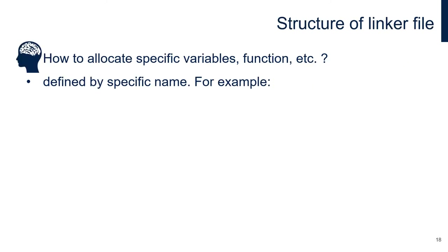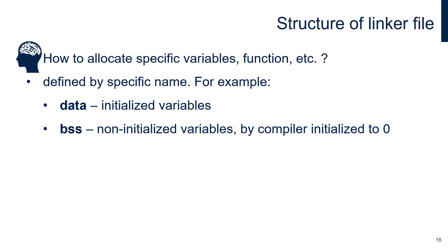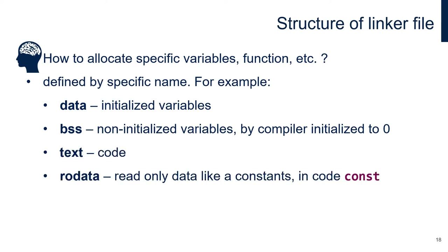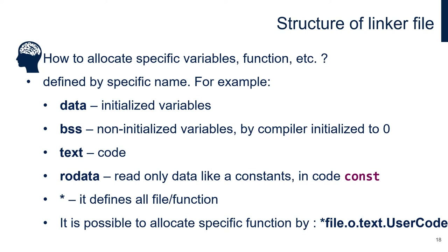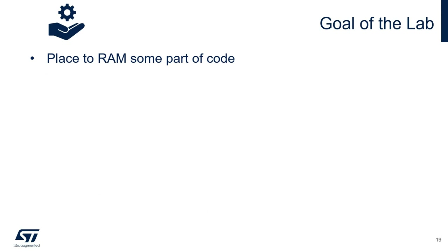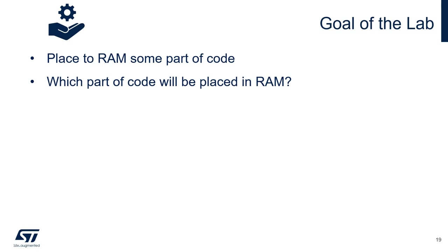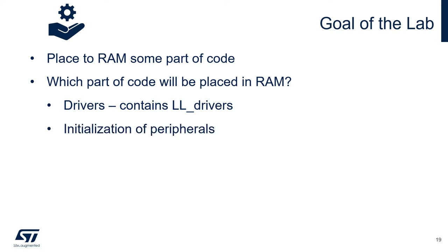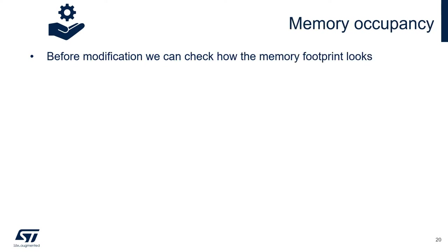Where data is stored is defined in the linker file or linker script. Definitions and allocations are made in chronological order, and each IDE has different semantics. We will do modifications in the linker file for GCC. In cases where the vector table is placed in RAM, do not forget to change the VTOR register. The linker file uses specific section names: data for initialized variables, BSS for non-initialized variables, text for code, and RO data for read-only data like constants. The goal of this lab is to place the LL drivers, peripheral initialization functions, and our callback function into RAM.